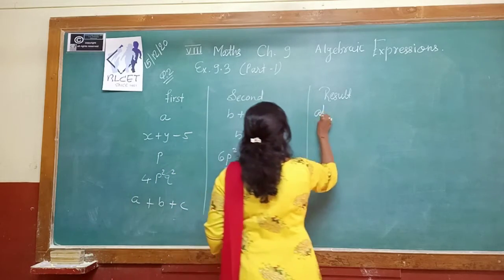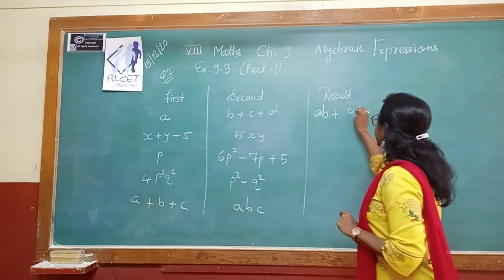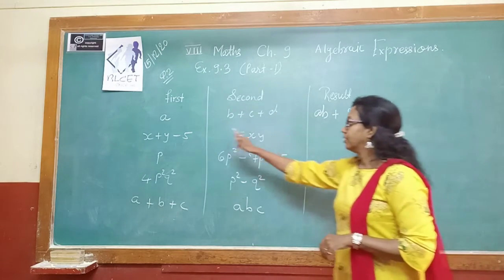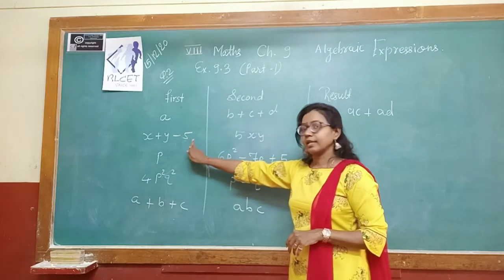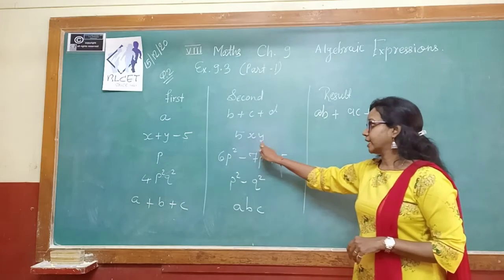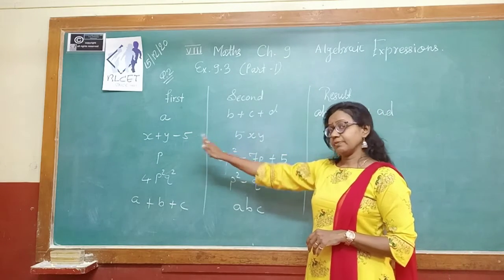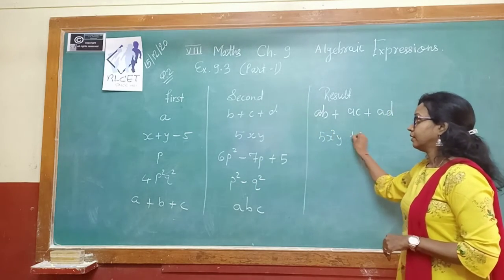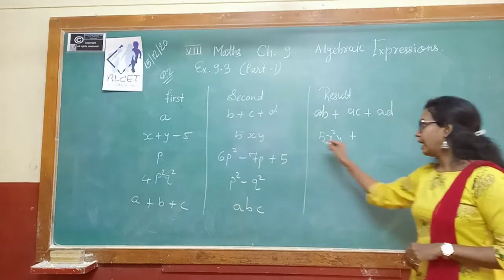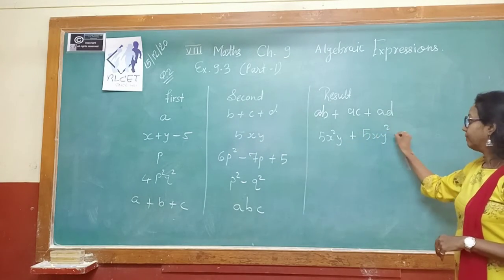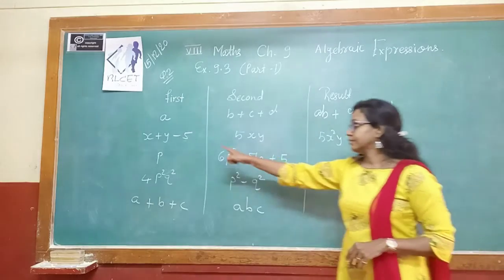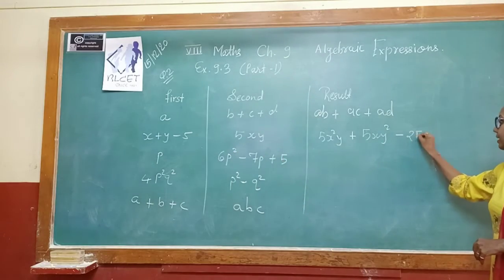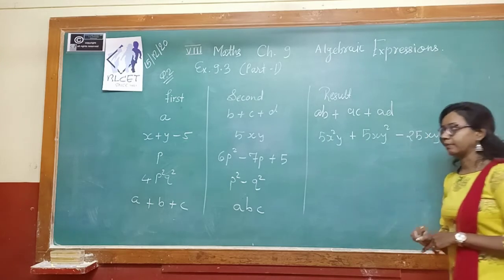So a multiplied with b gives ab, plus ac, plus ad. That is our result after multiplication. Next, (x + y − 5) multiplied with 5xy: 5xy × x gives 5x²y, then 5xy × y gives 5xy², and the minus sign is there for the last term, so 5xy × 5 gives minus 25xy. So this way we can do the multiplication.